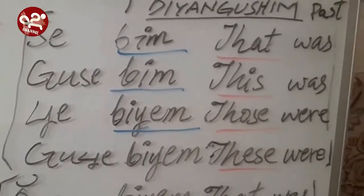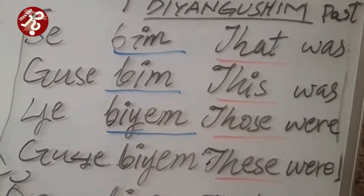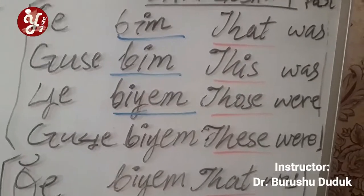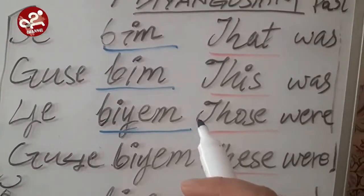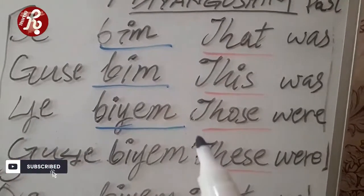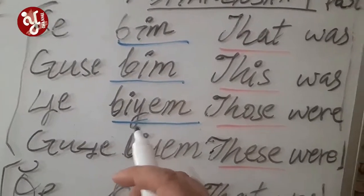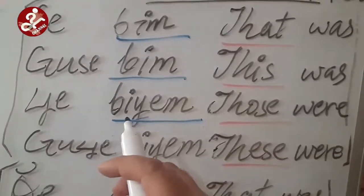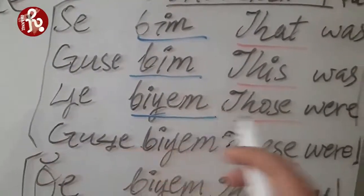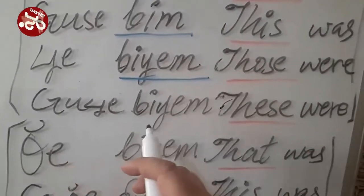For example, 'Sheep' — in Burushaski you call sheep 'Bellas'. In English the singular and plural are both 'Sheep'. So in Burushaski: Bellas Se Bim means 'those were sheep'. Guse Bim means 'these were'. So Guse Bim is used for 'these were' with non-living beings or animals.